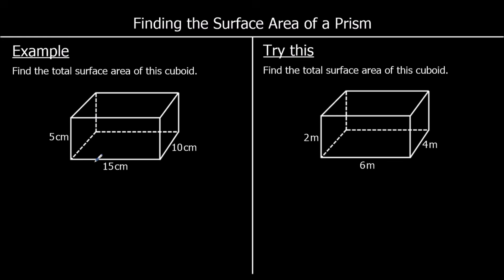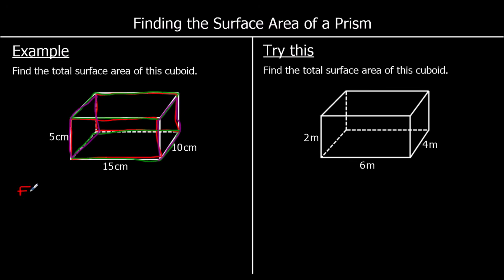We can see a rectangle on the front of the shape, and there's going to be an identical rectangle at the back. There's a rectangle at the top of the shape and an identical rectangle on the bottom. And another rectangle on the side, with an identical rectangle on the other side. So there are six rectangles, and we are going to find the area of each one and add them together.